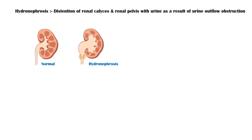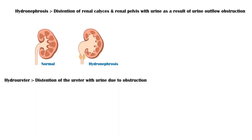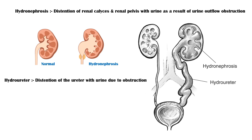Hydronephrosis is defined as distension of the renal calyces and renal pelvis with urine, as a result of urine outflow obstruction. This image shows a comparison between a normal kidney and a kidney with hydronephrosis. The related term hydro-ureter is defined as distension of the ureter with urine due to obstruction, and it could be either unilateral or bilateral. Here is an image of a urinary system with both hydronephrosis and hydro-ureter.